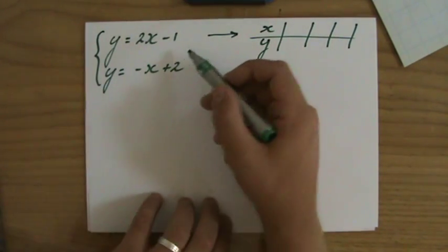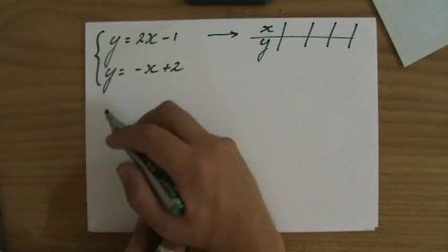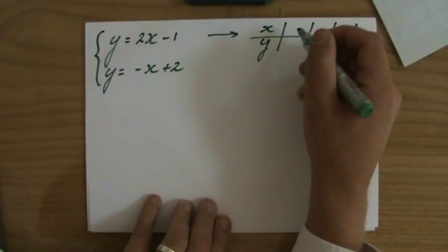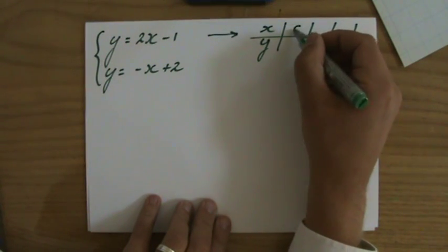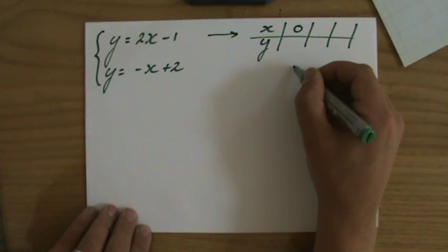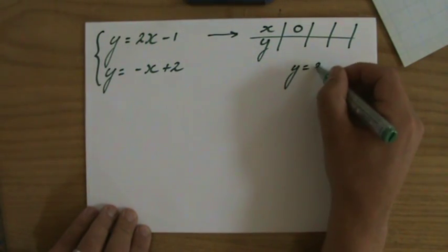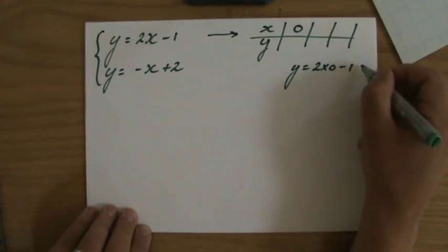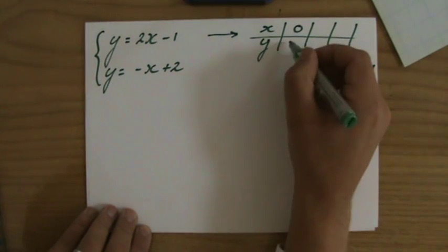Let's do the first one. I'll choose something for X, any value, let's keep it small, for instance 0. And when X is 0, Y is going to be, I'll write that here, Y is going to be 2 times 0 minus 1, and that is minus 1.